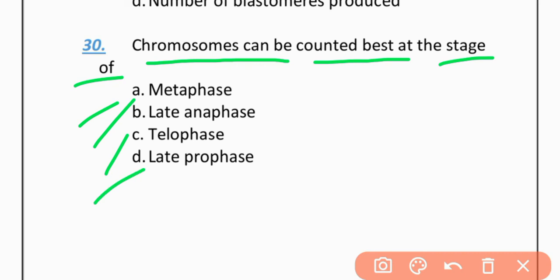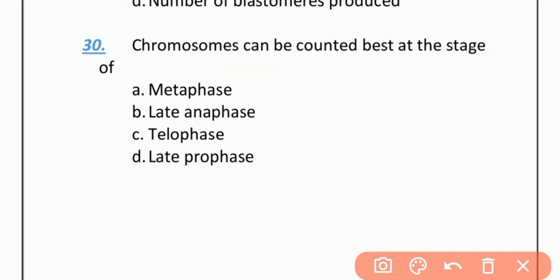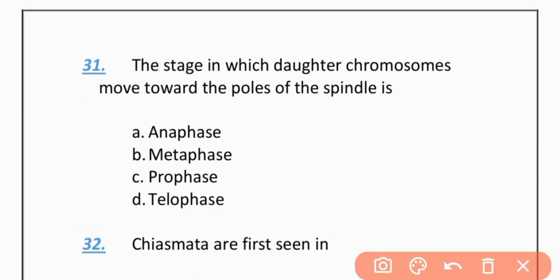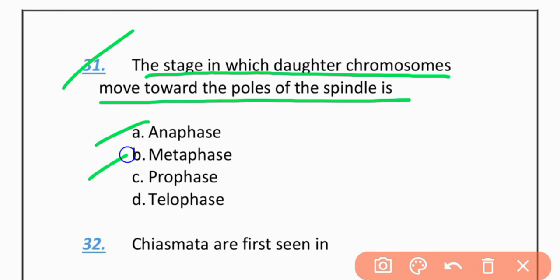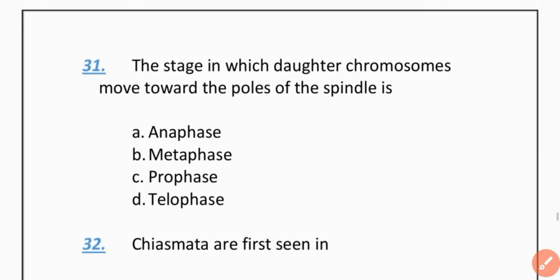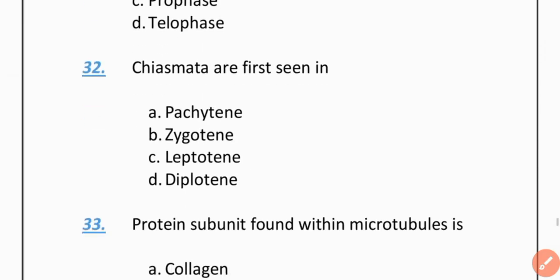MCQ 30: Chromosomes can be counted best at the stage of — Option A: Metaphase. Option B: Late anaphase. Option C: Telophase. Option D: Late prophase. The correct option is A — Metaphase. MCQ 31: The stage in which daughter chromosomes move toward the poles of the spindle is — Option A: Anaphase. Option B: Metaphase. Option C: Prophase. Option D: Telophase. The correct option is A — Anaphase.